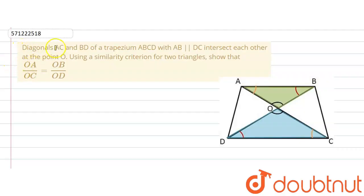The given question says that diagonals AC and BD of a trapezium ABCD with AB parallel DC intersect each other at point O. So diagonals AC and BD are intersecting at point O, and ABCD is a trapezium where AB is parallel to DC. This is what is given in the question.